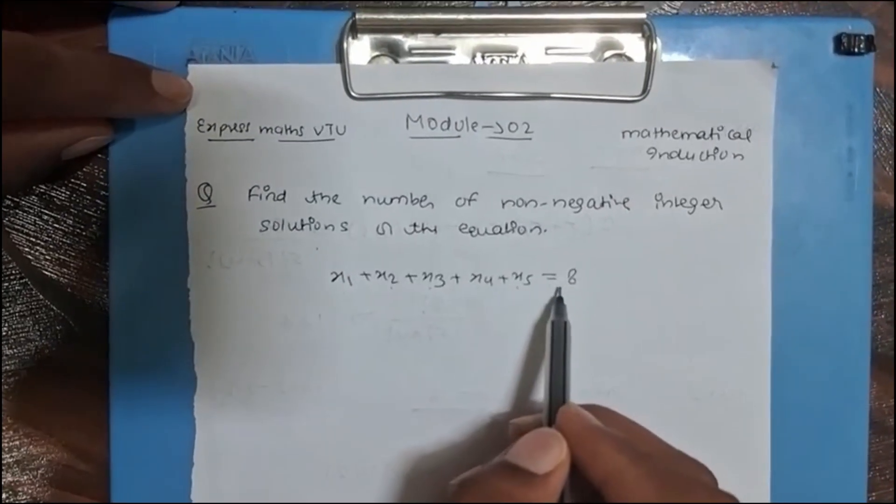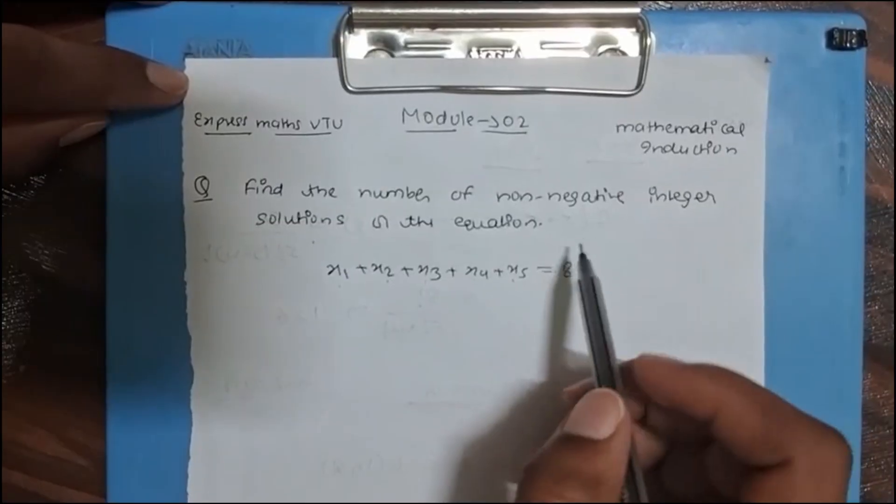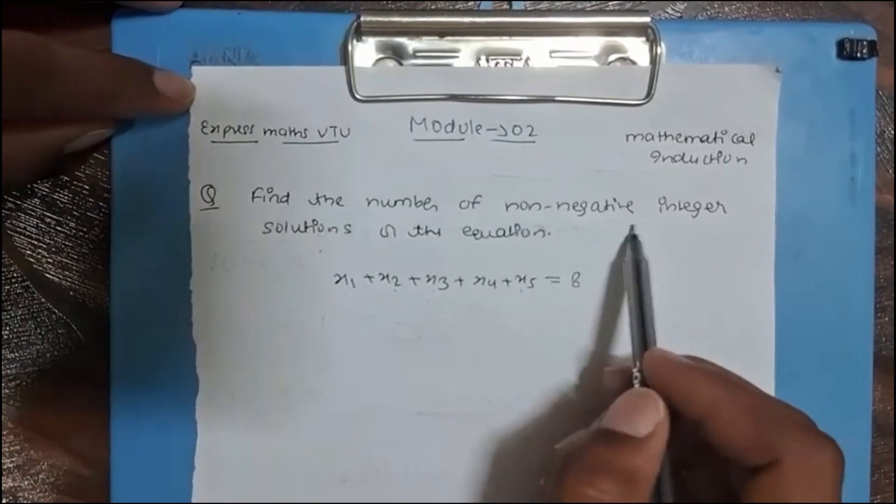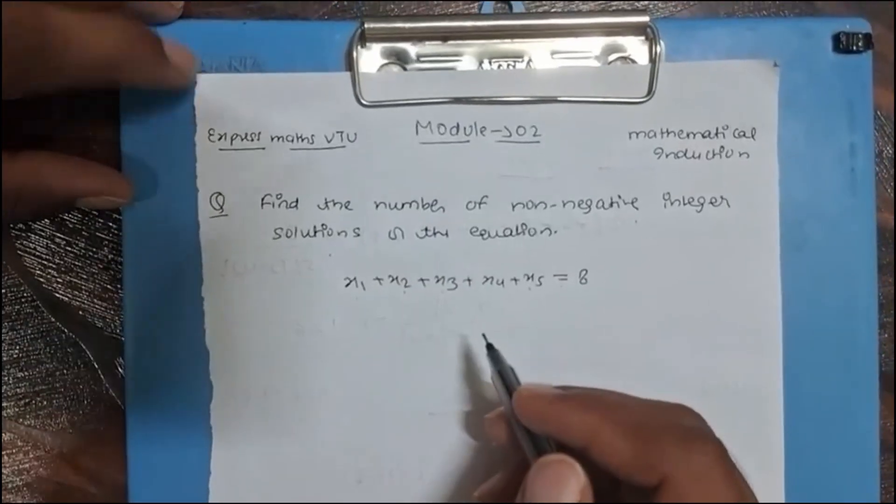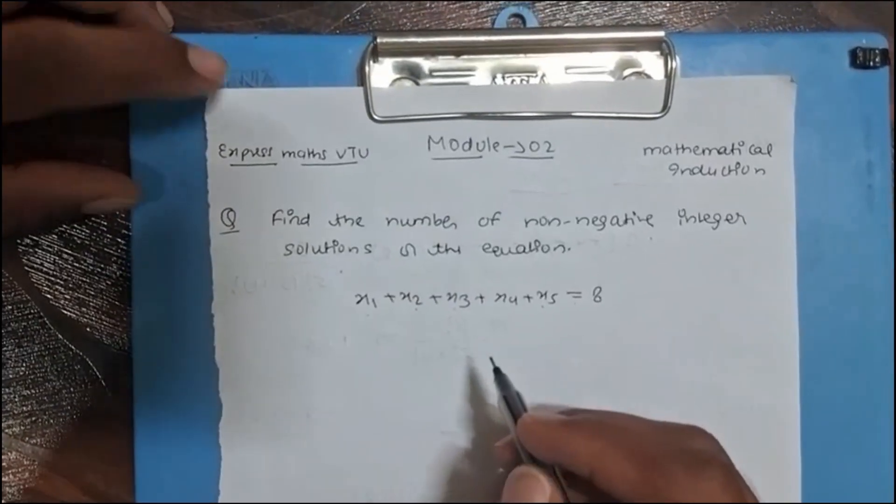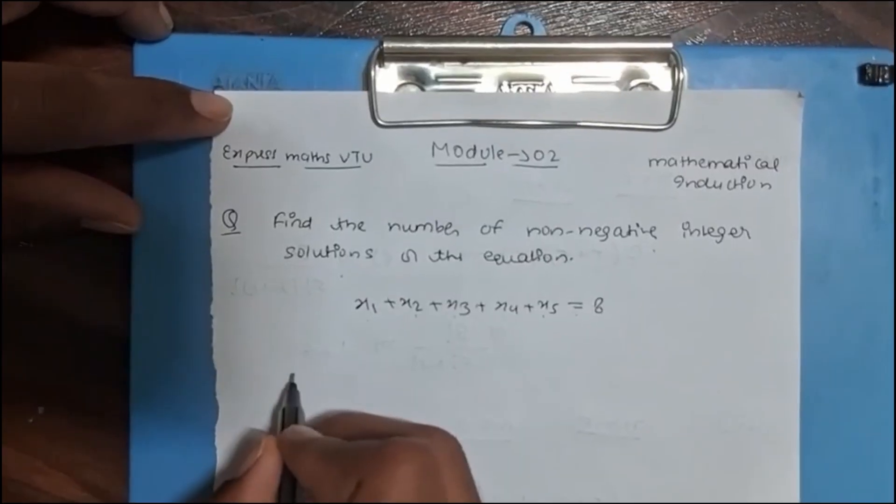Here we can clearly see that non-negative integer solution means repetition combination is there. In the last video I told you the formula; again I'll write it there: repetition with combination, combination with repetition.